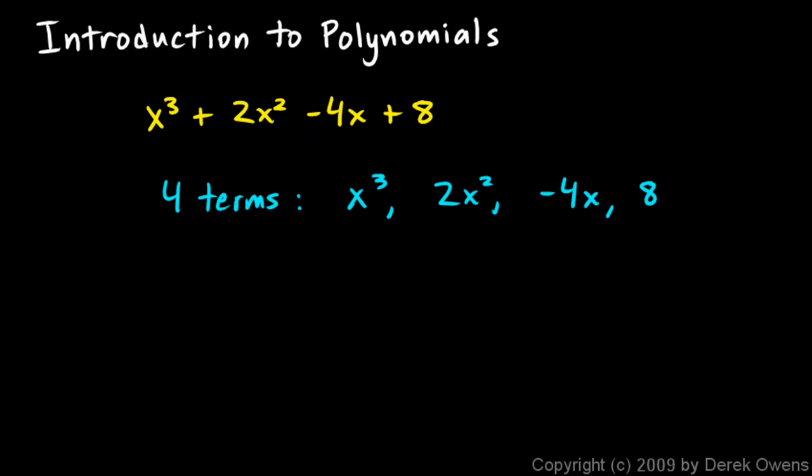The terms can be added or subtracted. Remember that subtraction can always be rewritten as addition, so we could think of this polynomial like this: x cubed plus 2x squared plus negative 4x plus 8. If you think of all the terms as being added together, then it's clear that this term is negative.